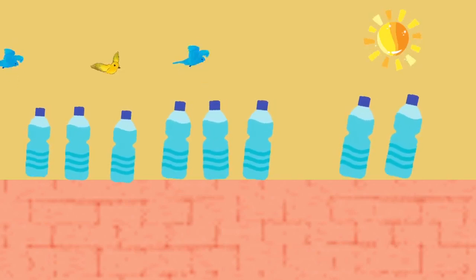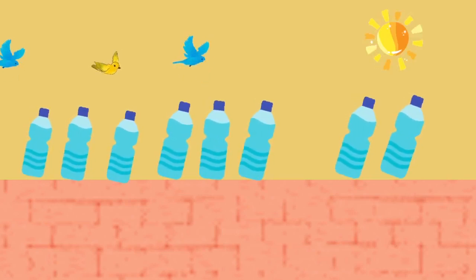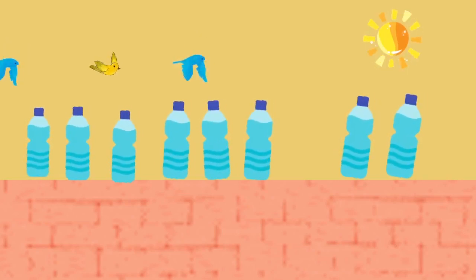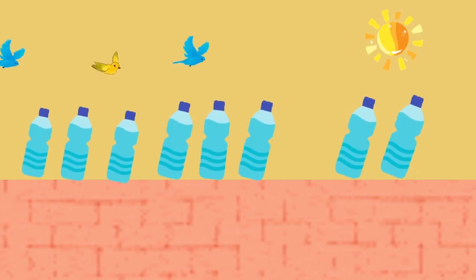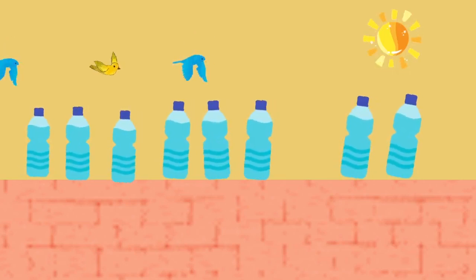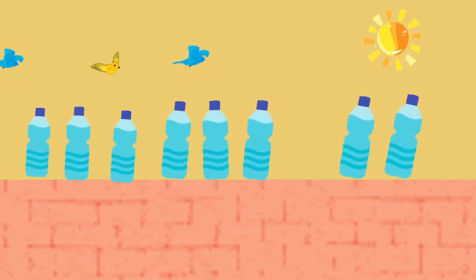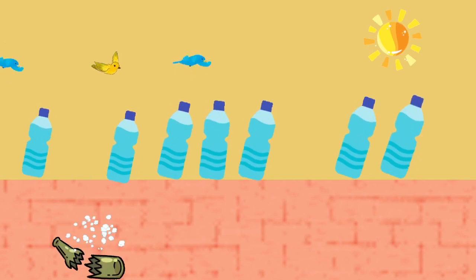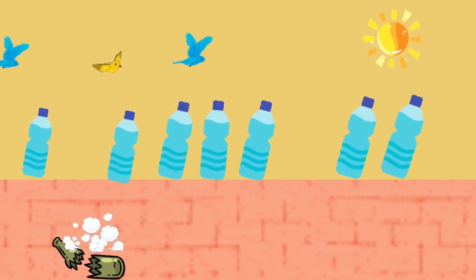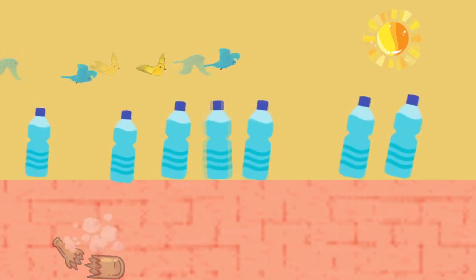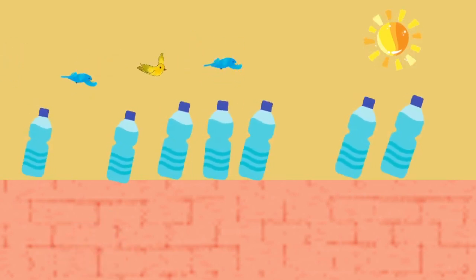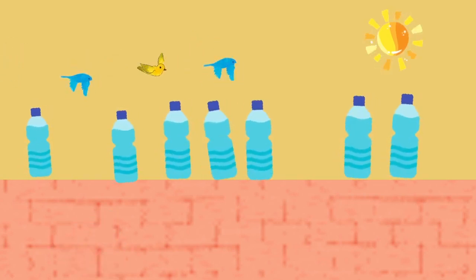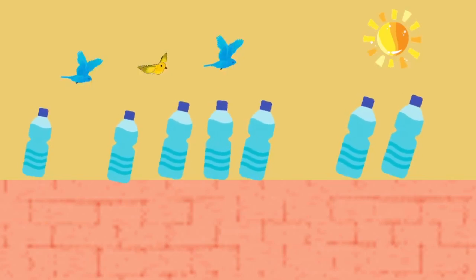Eight green bottles sitting on the wall, eight green bottles sitting on the wall. And if one green bottle should accidentally fall, there'll be seven green bottles sitting on the wall.